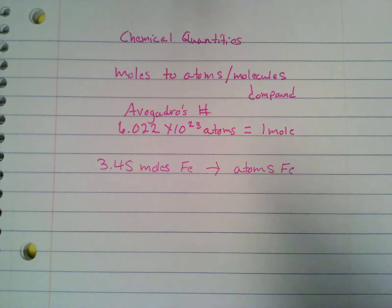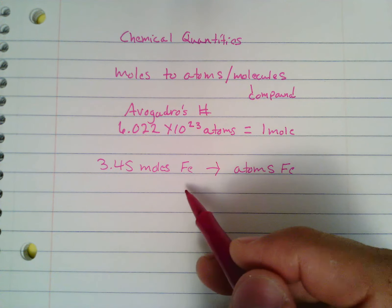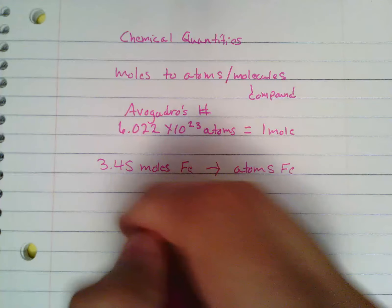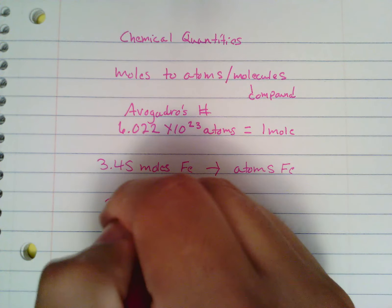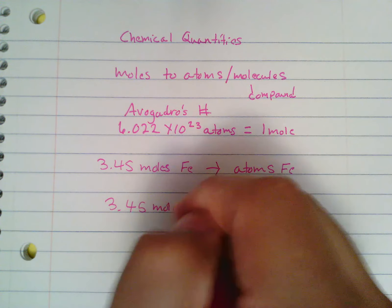Because it's moles to atoms, we do not need to use the periodic table. It doesn't matter if this is iron, potassium, argon, helium, or chlorine. You would then just set up your typical conversion, so 3.45 moles of Fe.